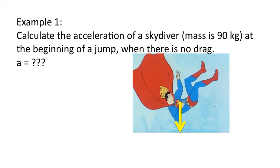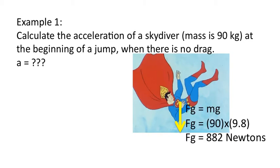Let's look at a sample problem. Example one. Calculate the acceleration of a skydiver at the beginning of a jump, when there is no drag. So that's our goal. The yellow vector represents the force of gravity, or the weight. That's how we calculate the force of gravity. It's always mass times the acceleration due to gravity, which is 9.8. When you work through the math, that's 882 newtons.